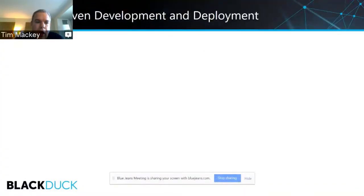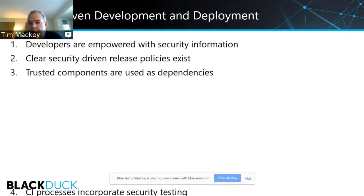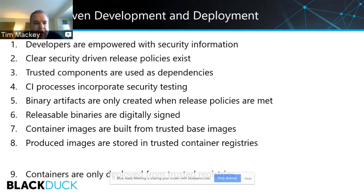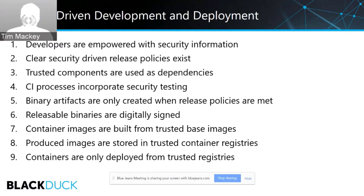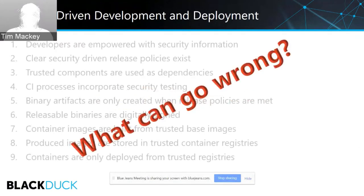I'm going to start with an assertion: from a development perspective, we have baked security into our SDLC. We've followed a security-driven development and deployment model — developers are empowered with security information, trusted components are part of our CI loop, security testing is baked in, binary artifacts are only created if policies are met, images are signed, and deployed only from trusted container registries. If those nine things are met, what could go wrong?